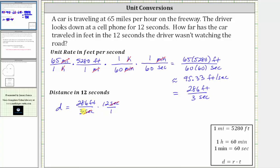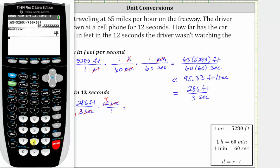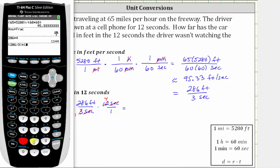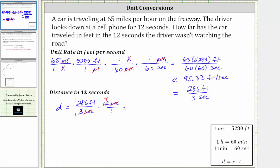Also notice how three and 12 share a common factor of three, so we can simplify. There is one three in three, and four threes in 12. Now let's go to the calculator. 286 times four is equal to 1,144. We could have also found this product by entering 286 divided by three in parentheses, and then times 12 — and of course we get the same result. The distance traveled in 12 seconds is 1,144 feet.